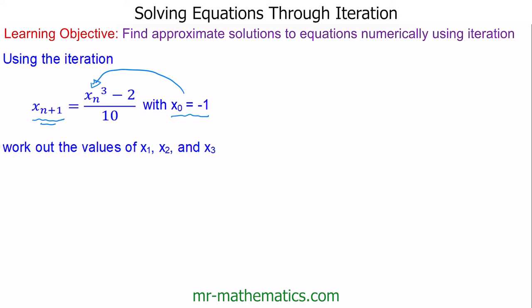To work out x₁, we substitute x₀ in place of xₙ. We'll cube it, take away 2, and divide by 10. This gives us (-1)³ - 2 divided by 10, which is -0.3. So now we have our first iteration: x₁ = -0.3.